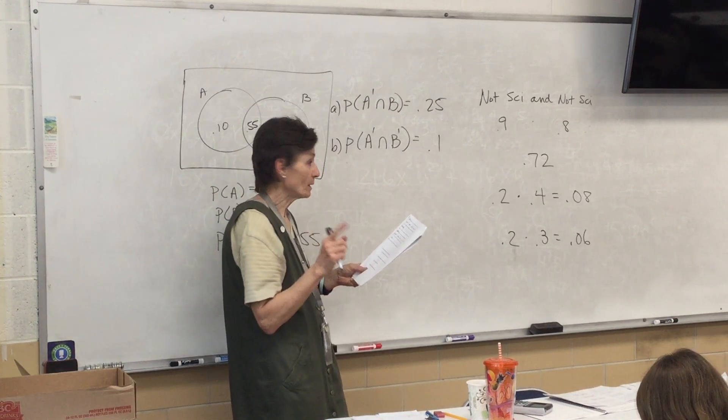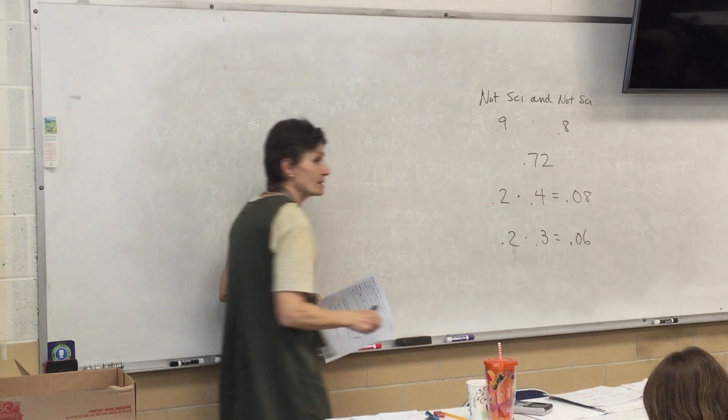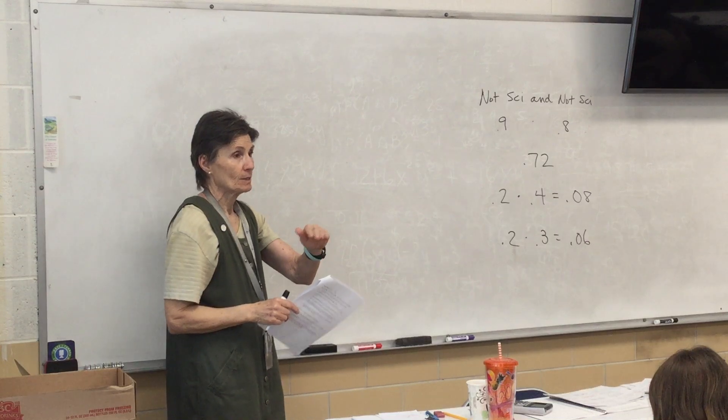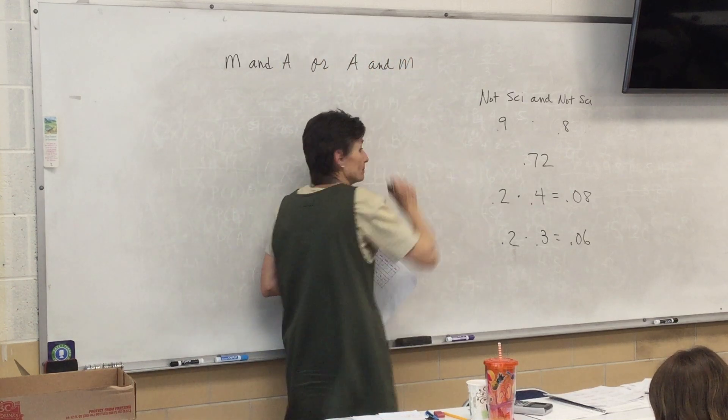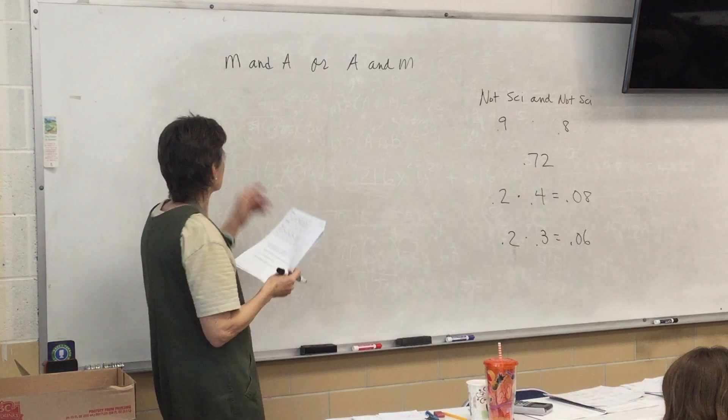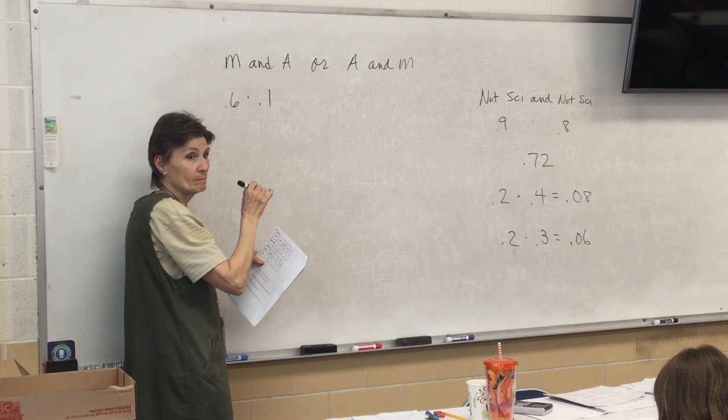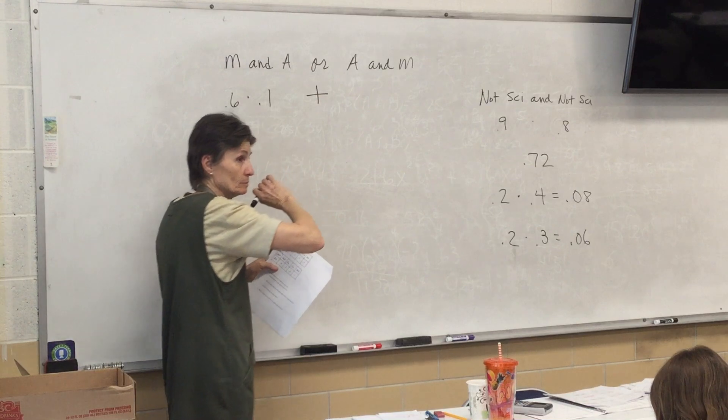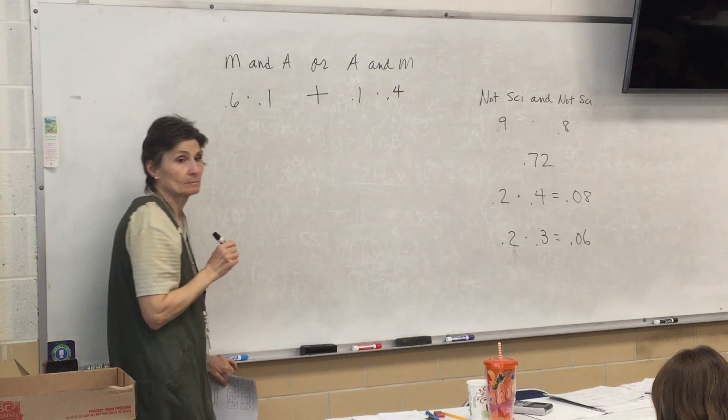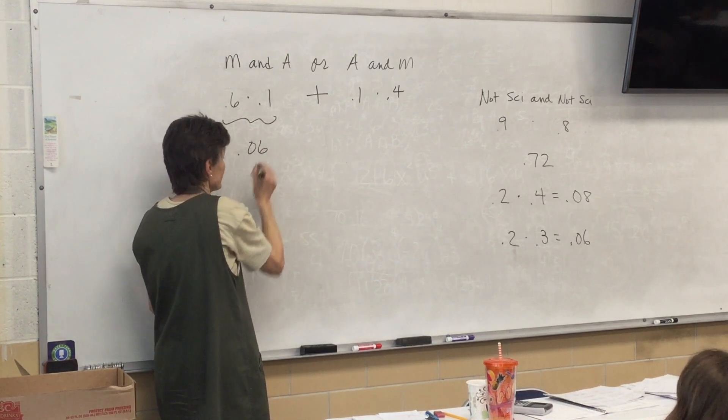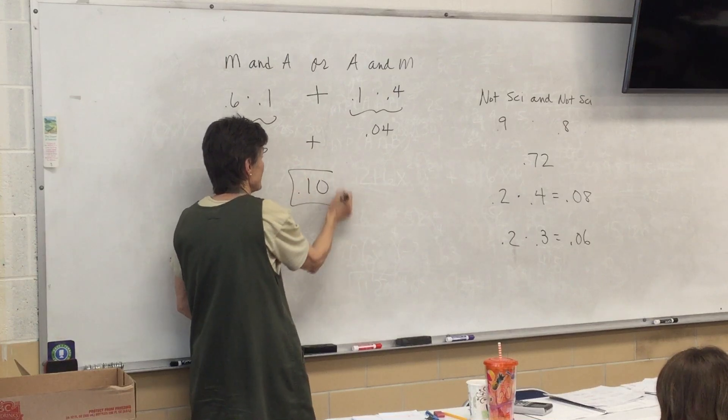What is the probability that one will like math and the other one will like art? Now, this is the one you have to be careful on because does it say it has to be math and then art? No. So it could be math and art or it could be art and math. So what is math and art? 0.6 times 0.1 or art and then math, 0.2 times 0.2. So we multiply here, 0.06, we multiply here, 0.04, we add it together and get 0.10, there is the answer to the question.